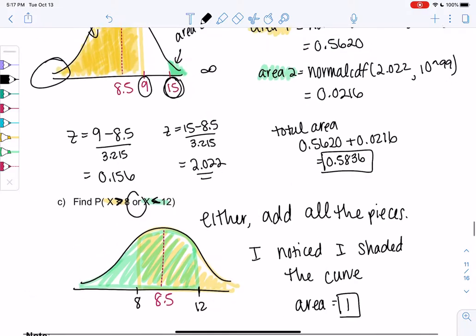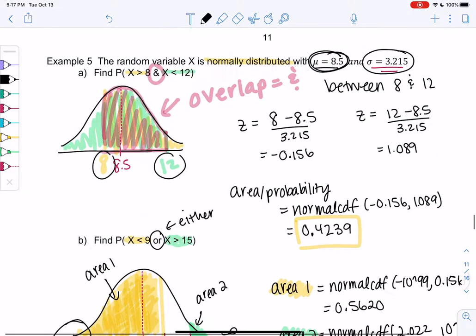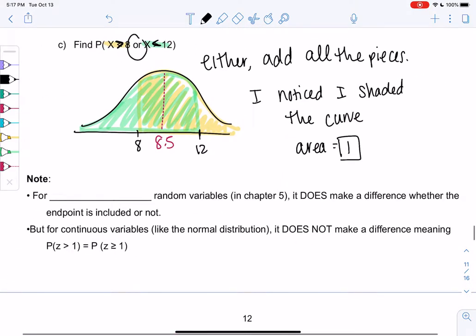So a few notes. I don't know if you've noticed if some of the examples we've used greater than. Some we've used greater than or equal. So in chapter 5 it is a big deal for discrete random variables.